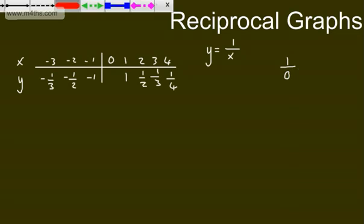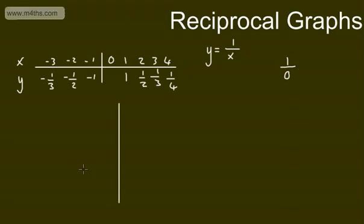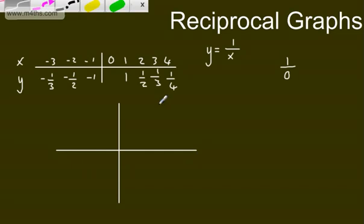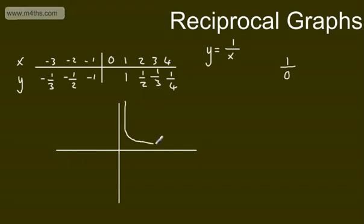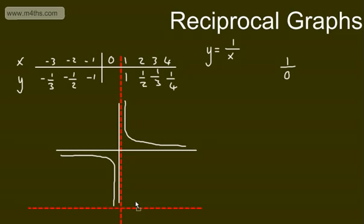The general shape of the reciprocal graph comes around like so — it will never touch the axes. We will have vertical and horizontal asymptotes: a vertical asymptote on the y-axis and a horizontal asymptote on the x-axis. That's the general shape.